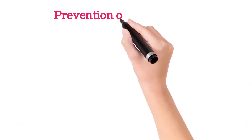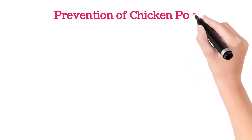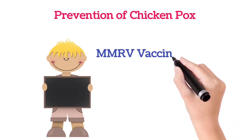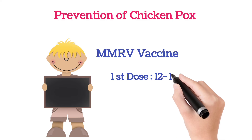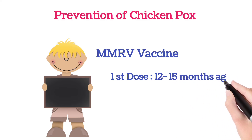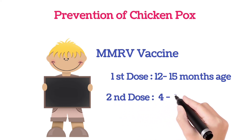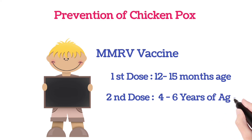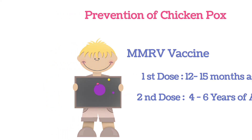Prevention includes the MMRV vaccine. The first dose is usually given at 12 to 15 months of age, and the second dose is given at 4 to 6 years of age. Even after taking this vaccine, chickenpox may still occur, but the severity will be very less.